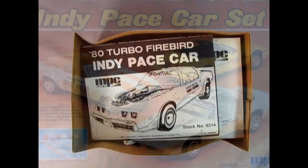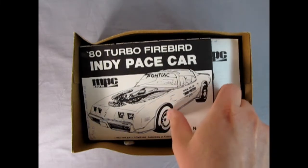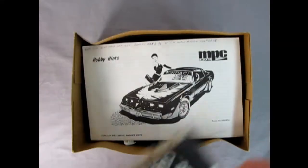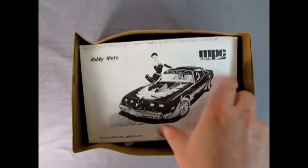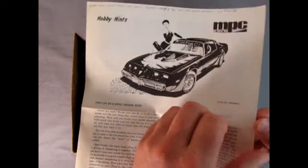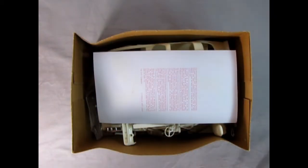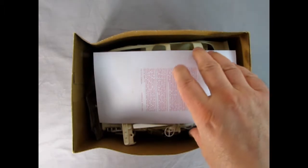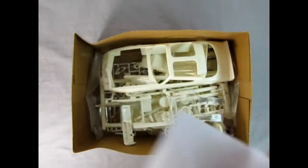That box included this Firebird, the 69 Camaro, and the 86 Corvette. However, these are the instructions we got with the model, and then I also got this thing - hobby hints. That was pretty cool, folds out to a big sheet, tells you everything you want to know about building models including using airbrushes.